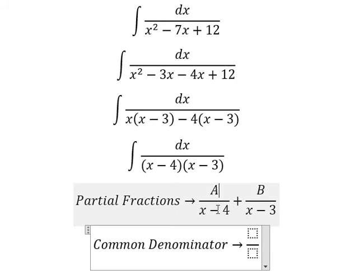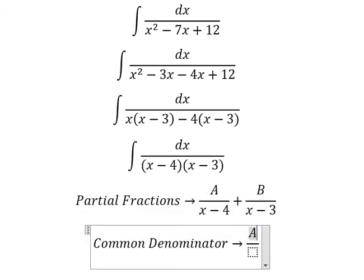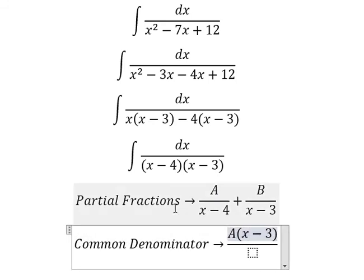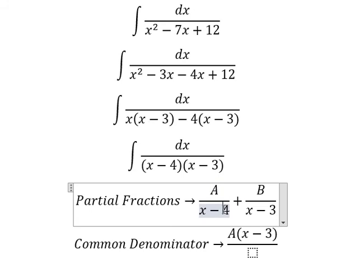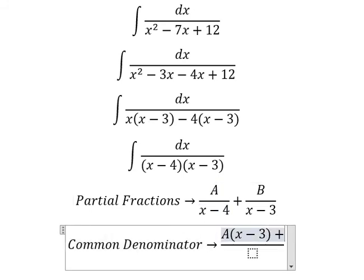So we have capital A multiplied by (x-3) because this term is missing (x-3) in the denominator. Similarly for capital B, we multiply by (x-4).